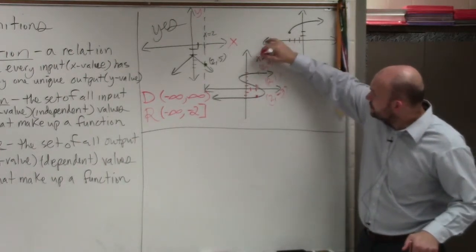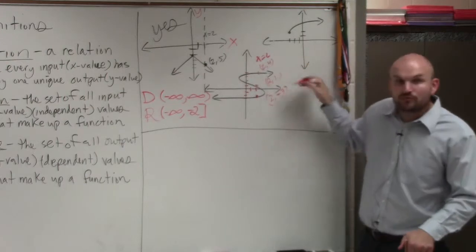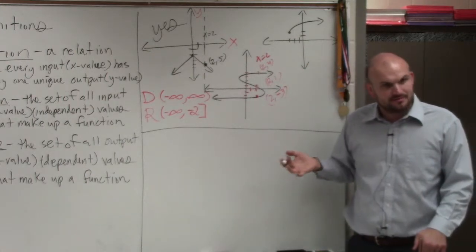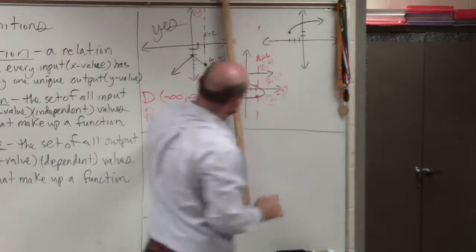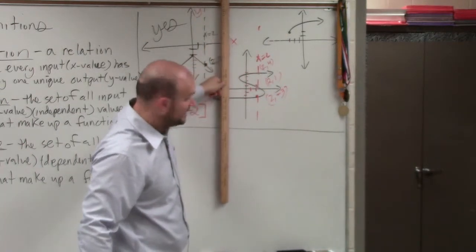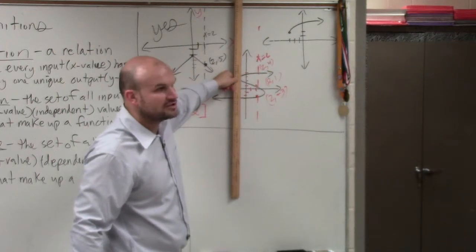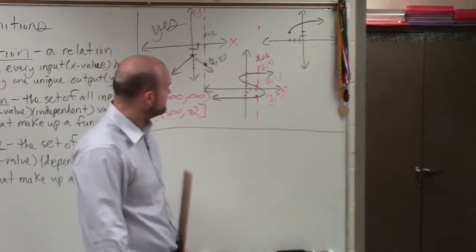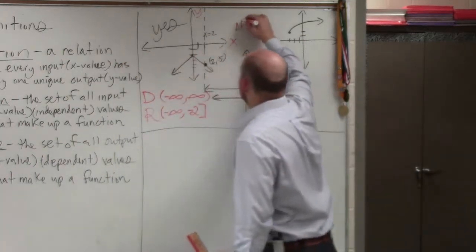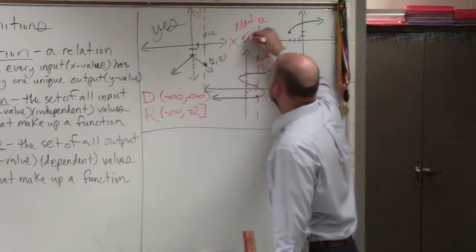Well now, when x equals 2, I have 1, 2, 3 y values, right? So it's not a function. Or if you wanted to use the vertical line test, you can see that the vertical line is good here. But once it crosses the function more than once, it's not a function. And that's why the vertical line test works. All right, so that's not a function.